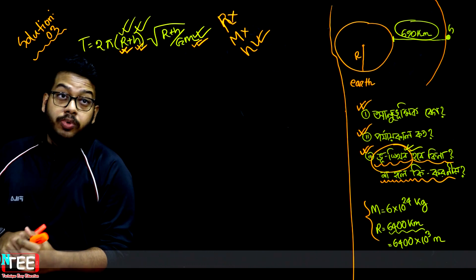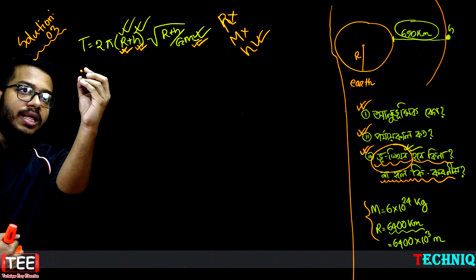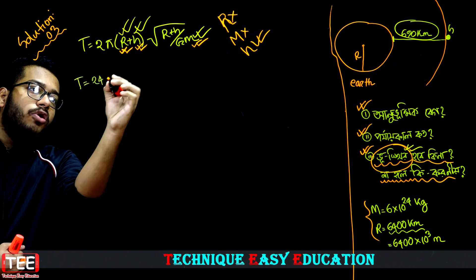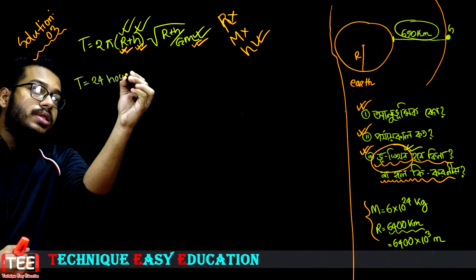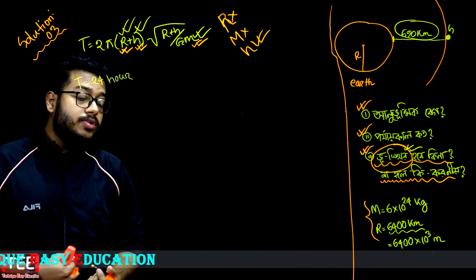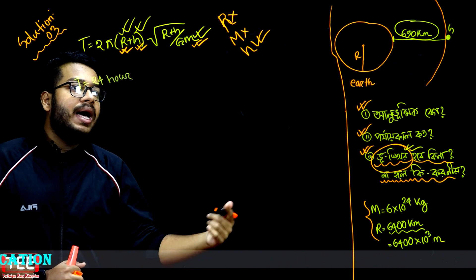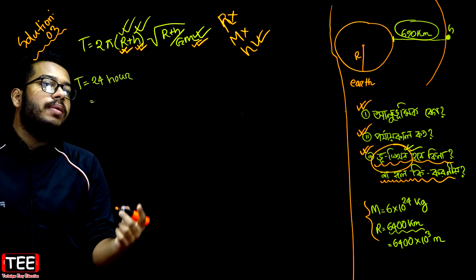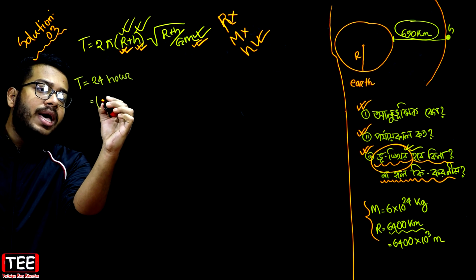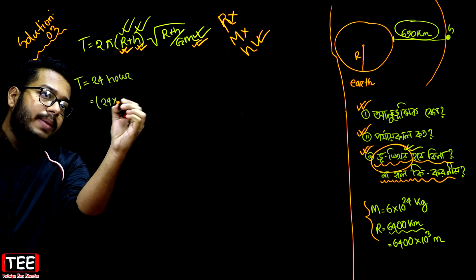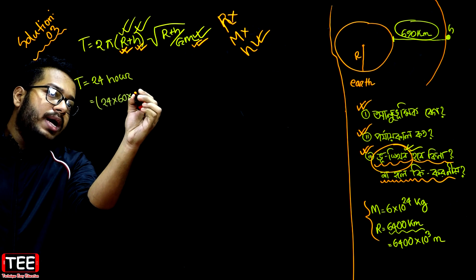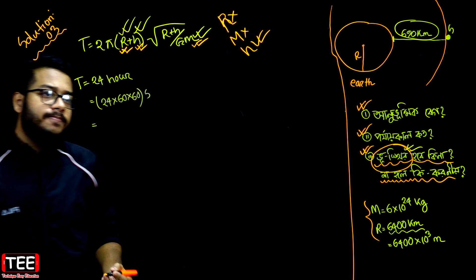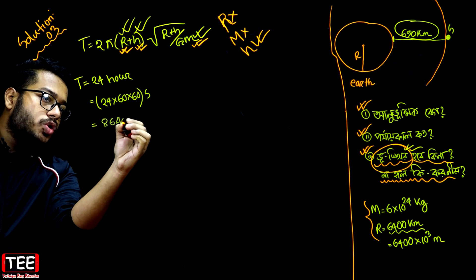So we have said that the period value T is 24 hours. But when we solve a mathematical problem, we will solve the SI unit. So we will solve the SI unit for 24 hours, so we will have seconds: 24 multiplied by 60, multiplied by 60 seconds. So the actual result is 86400 seconds.